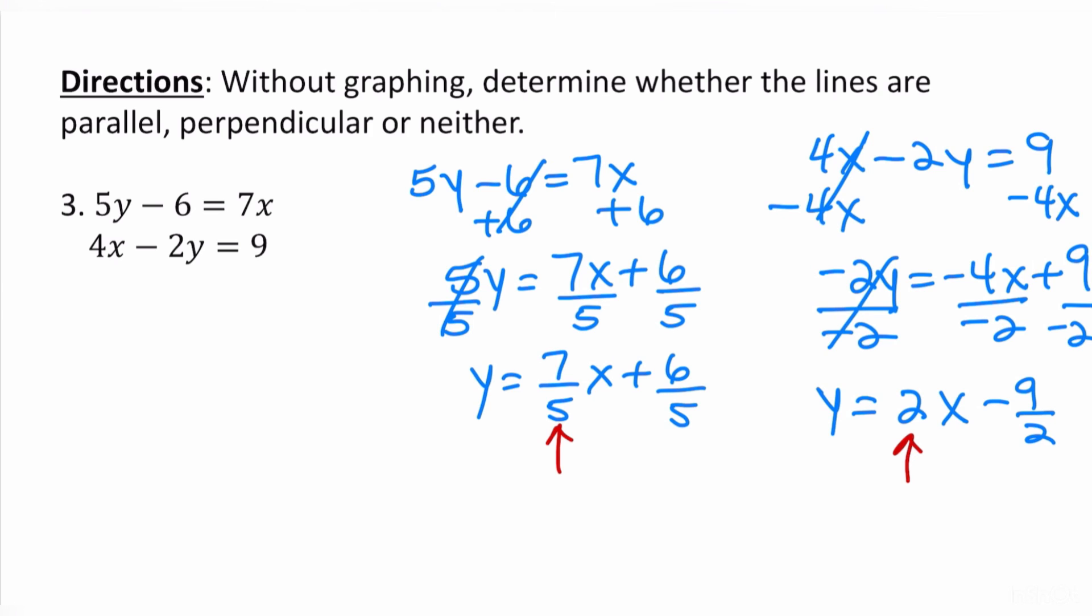What we're trying to determine are the slopes right here. Are they exactly the same? No. So are they parallel? No. In order for two lines to be parallel they have to have exactly the same slope. Are these negative reciprocals of each other? Absolutely not. Therefore they are not perpendicular so these two lines are neither. Yes they are going to intersect but no they are not forming a 90 degree angle when they cross.